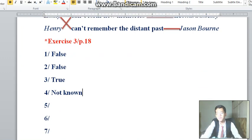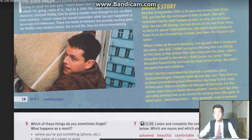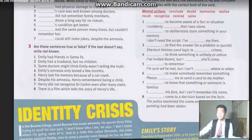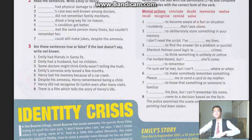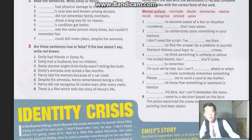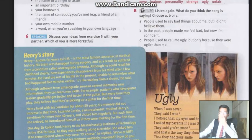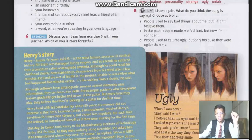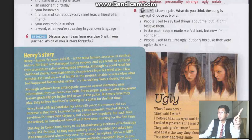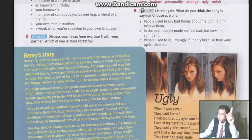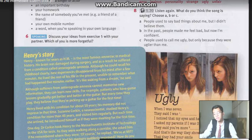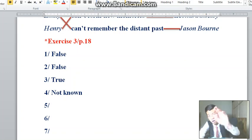Number 5: 'Henry lost his memory because of a car crash.' Let's read next. Henry, known for years as H.M., is the most famous amnesiac in medical history. His brain was damaged during surgery — not from a car crash. So we'll put false for the answer to number 5. False — from the surgery, not from the car crash.